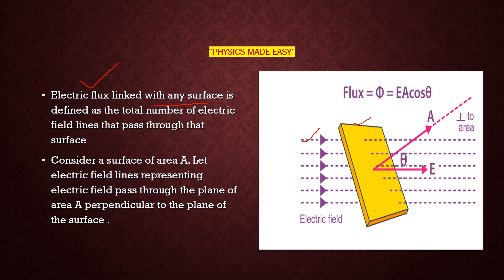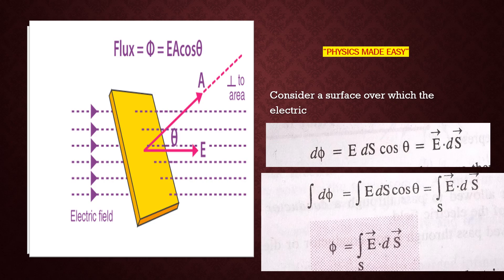As we considered earlier, this surface has area capital A. The electric field lines passing through this area represent the electric field through the plane with area capital A, and this plane is perpendicular to the electric field lines. The surface has area capital A, and its area vector is always perpendicular to its plane. This arrow represents the direction of the area vector, and there is angle theta — the angle between the electric field and the area vector of the surface element.